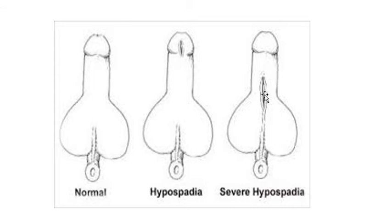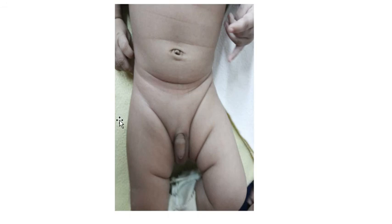The external meatus opens here and the rest of the urethra distal to it is deficient. This is the normal genitalia in a child — the penis and the scrotum underneath. This is the anomaly and the glans is surrounded by the prepuce.